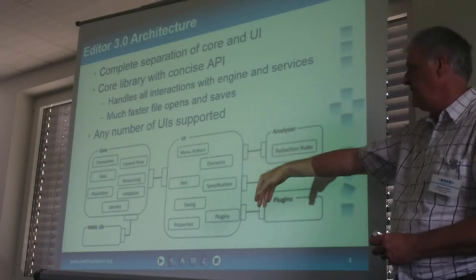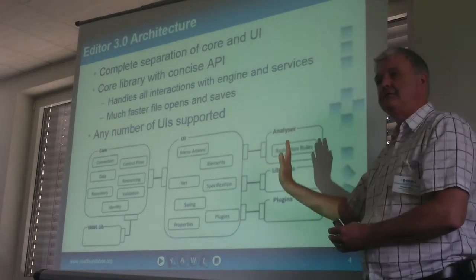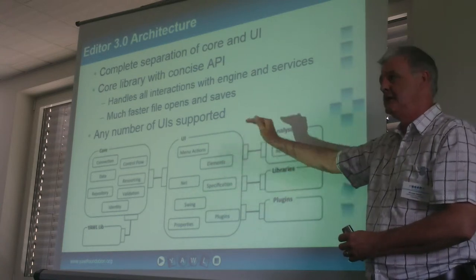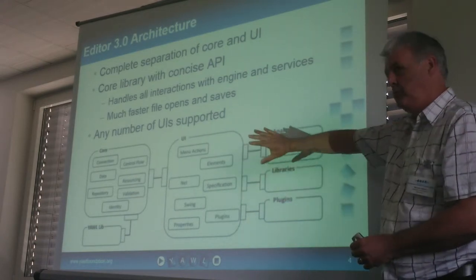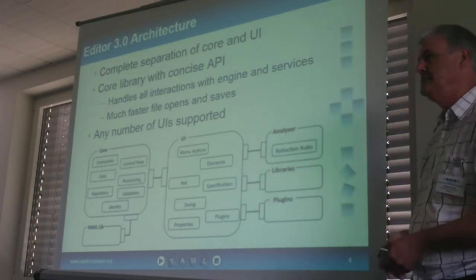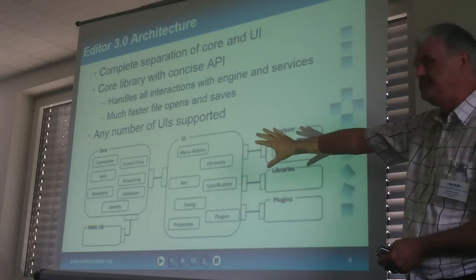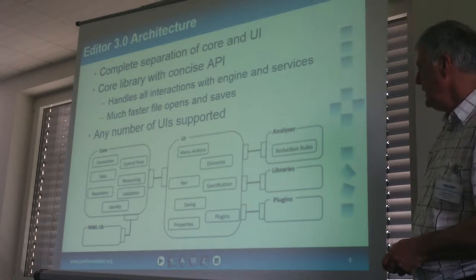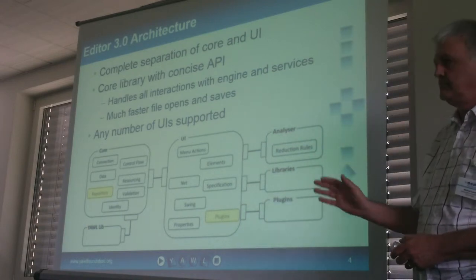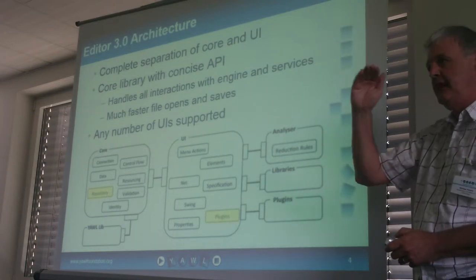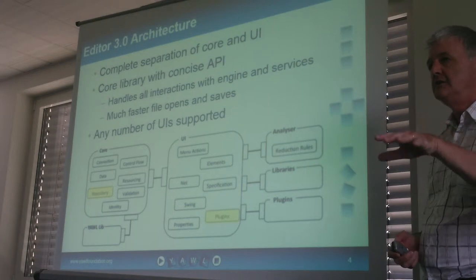A very concise standard API plugs into the user interface. Two things we wanted to do: first, separate that core from the user interface to allow other user interfaces to be plugged into the core, and through that API be able to construct your own specifications. Secondly, we wanted to improve the existing UI and make it easier to use. The analyzer has also been separated out as a separate library, so the libraries are now outside of the YAWL editor jar file.